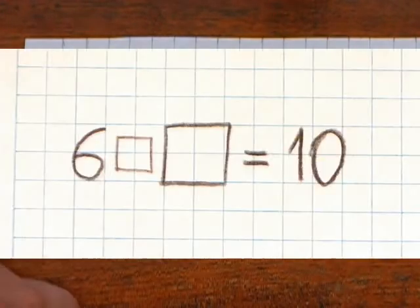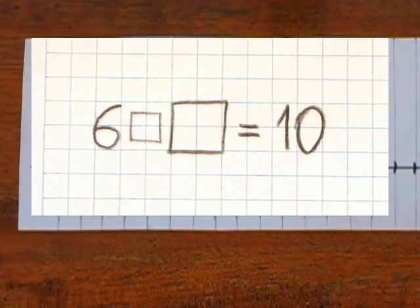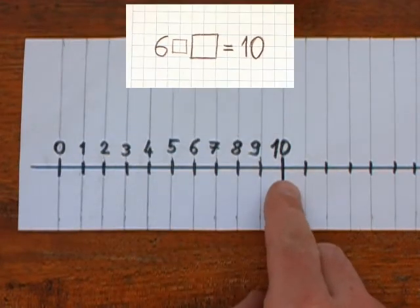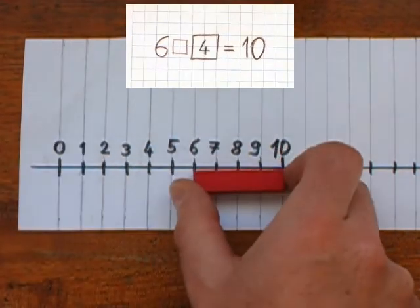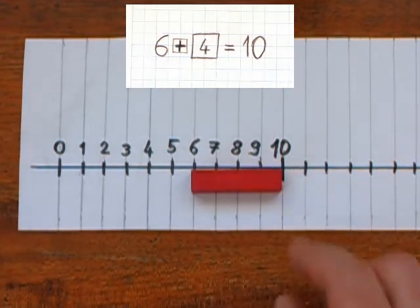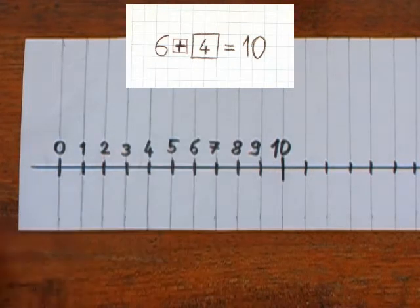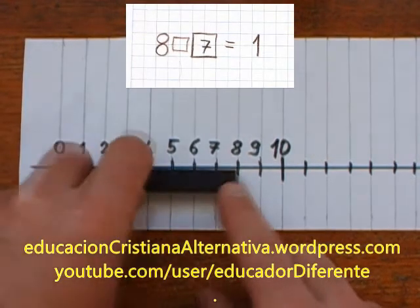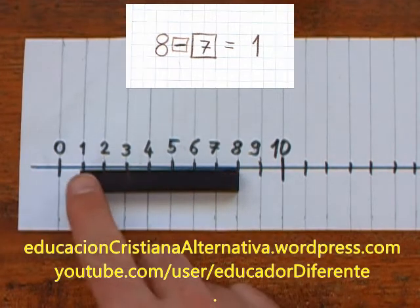We can also give the start and the end of the journey and let the child complete what is missing. We want to travel from the six to the ten. We find that a rod of four covers this journey. We travel to the right, so this is an addition. If we want to travel from the eight to the one, we have to go to left, so this is a subtraction.